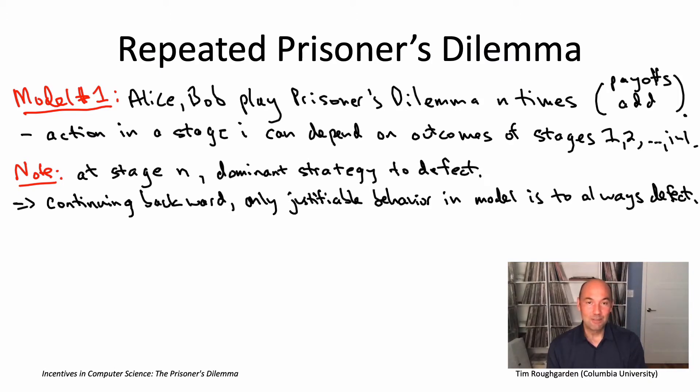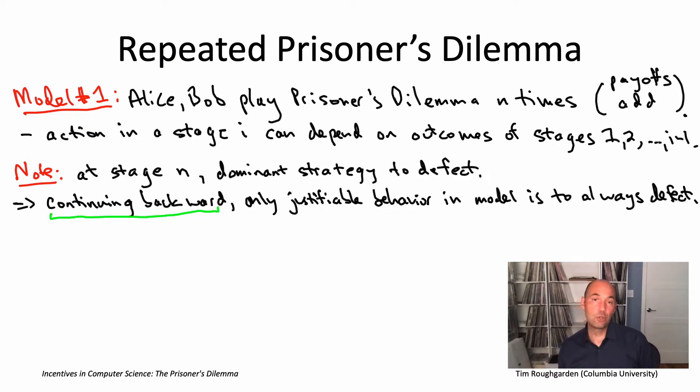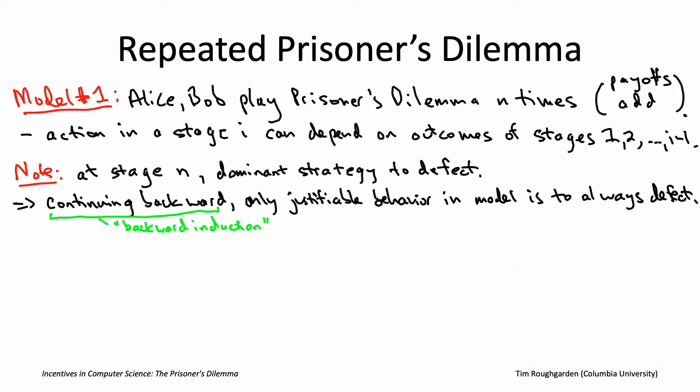That's kind of a bummer — kind of pessimistic. This idea of fast-forwarding to the end of the time horizon and working backward is sometimes referred to as backward induction. The takeaway is not that cooperation in real-world settings is somehow irrational. Rather, the exercise points out that we need a mathematical model different from the most obvious one — the fixed number of n stages. We're taking as ground truth the phenomenon that cooperation can be sensible in repeated prisoner's dilemma settings, because we see that repeatedly in the real world, and we're trying to reverse-engineer a mathematical model consistent with that belief.